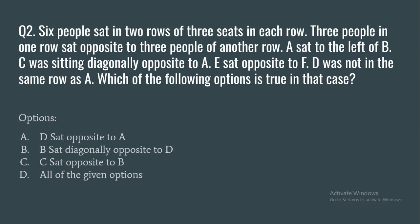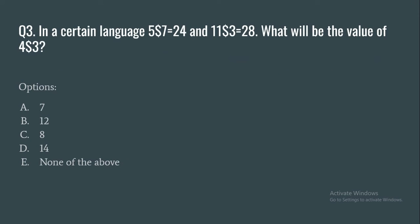Question 2: Six people sit in two rows of three seats each. Three people in one row sit opposite to three people in another row. A sits to the left of B. C was sitting diagonally opposite to A. E sits opposite to F. D was not in the same row as A. Which of the following is true? Options: (a) D sits opposite to A, (b) E sits diagonally opposite to D, (c) C sits opposite to B, (d) all of the above.